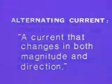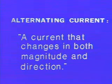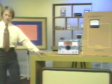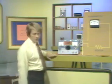We will begin by giving you a definition of AC. AC is the abbreviation for alternating current. Alternating current is a current which changes in both magnitude and direction. The term magnitude refers to the amount of current flowing in the circuit. The term direction refers to the direction in which current flows in the circuit.